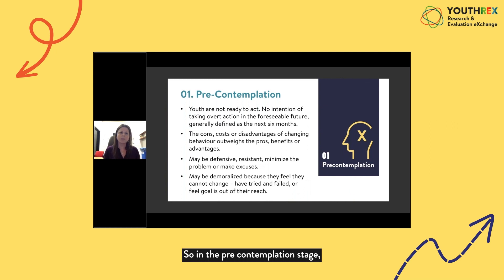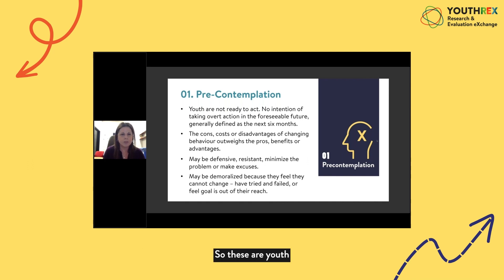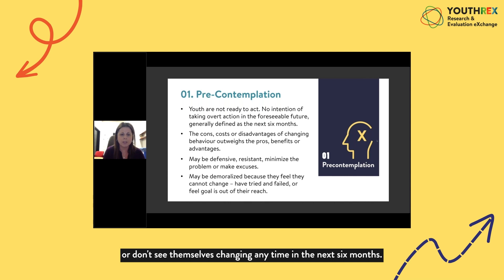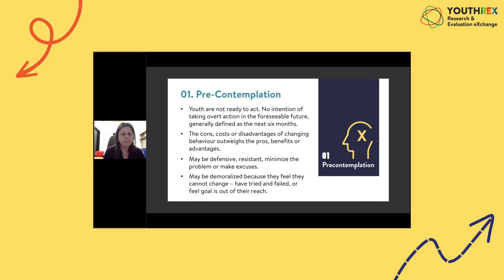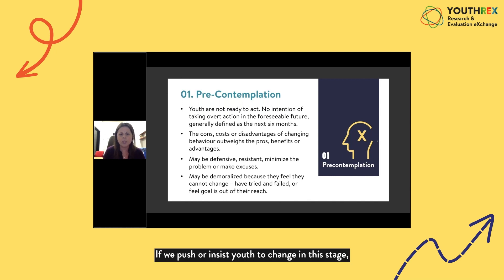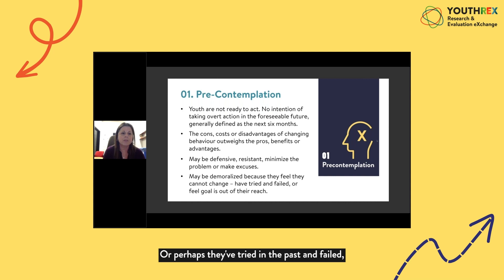In the pre-contemplation stage, youth aren't ready to act. They don't have any intention to take action in the foreseeable future — generally defined as the next six months. This is because the cons or disadvantages of changing outweigh the pros and benefits for them. If we push or insist youth change in this stage, they may become defensive or resistant, make excuses, or minimize the problem. They may feel demoralized because they feel they can't change, or they've tried in the past and failed.